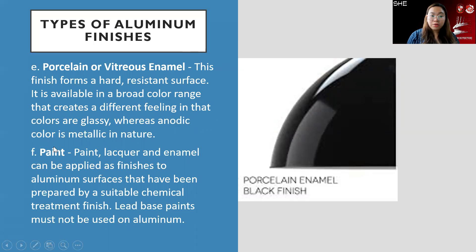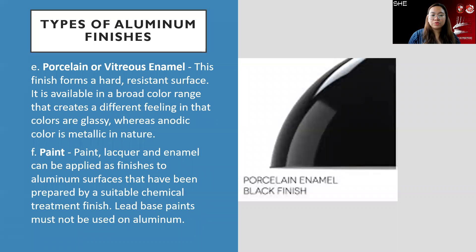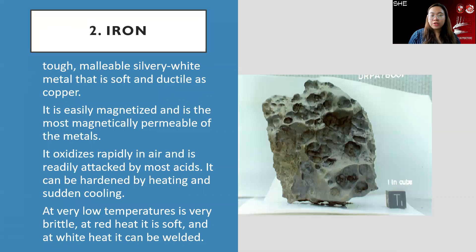Aluminum can also be finished with paint, lacquer, and enamel, applied to surfaces that have been prepared by a suitable chemical treatment. Note that lead-based paints must not be used on aluminum.